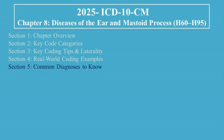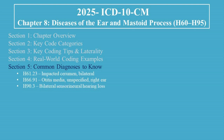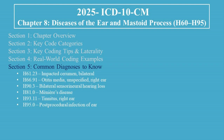Here's a list of frequently used codes in Chapter 8: H61.23 — Impacted cerumen, bilateral; H66.91 — Otitis media, unspecified, right ear; H90.3 — Bilateral sensorineural hearing loss; H81.0 — Meniere's disease; H93.11 — Tinnitus, right ear; H95.0 — Post-procedural infection of ear.